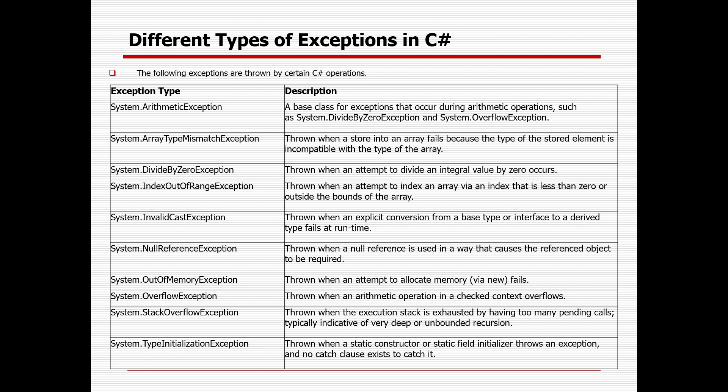IndexOutOfRangeException is thrown when an attempt to index an array via an index less than zero or outside the bound of the array occurs. For example, if you defined an array of length 5 but try to access index 7, it will throw IndexOutOfRangeException. InvalidCastException is thrown when an implicit or explicit conversion from a base type or interface to a derived type fails at runtime. NullReferenceException is thrown when a null reference is used in a way that requires the referenced object — for example, calling the length of a null string.